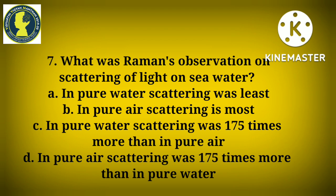Question seven: What was Raman's observation on scattering of light on sea water? Option A: In pure water, scattering was least. Option B: In pure air, scattering is most. Option C: In pure water, scattering was 175 times more than in pure air. Option D: In pure air, scattering was 175 times more than in pure water. The correct option is Option C: in pure water, scattering was 175 times more than in pure air.